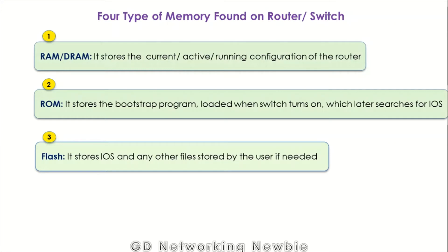The third type of memory available in a router or switch is known as flash. Flash actually stores the IOS — the Internetwork Operating System. Flash can also be used for storing other files if needed, but its main purpose is to hold the IOS operating system. ROM has the bootstrap program, and that bootstrap program searches for the IOS, which is available in the flash memory.